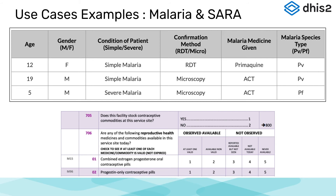Despite differences in frequencies of data collection or different devices used to collect the data, both of these use cases fit very well into the event model in DHIS-2, and we will use them as examples throughout the course. This highlights the potential flexibility of having DHIS-2 fit several needs based on the requirements and procedures that are outlined across various settings.